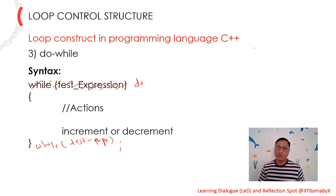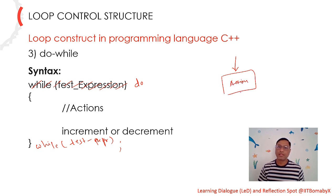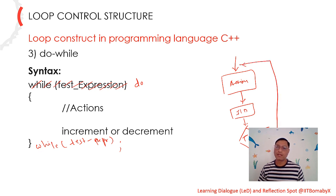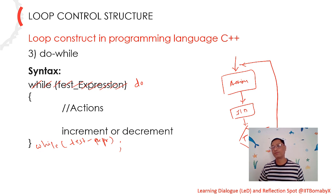Looking at the flowchart for do-while: when you enter, there is no condition to be checked — it directly performs an action. Then increment or decrement, which is not mandatory but keeps the loop progressive. Then it checks the condition. If it is true, it executes the same part again. If it is false, that means end of loop. This is why do-while is an exit control loop — the condition is checked at the end point.